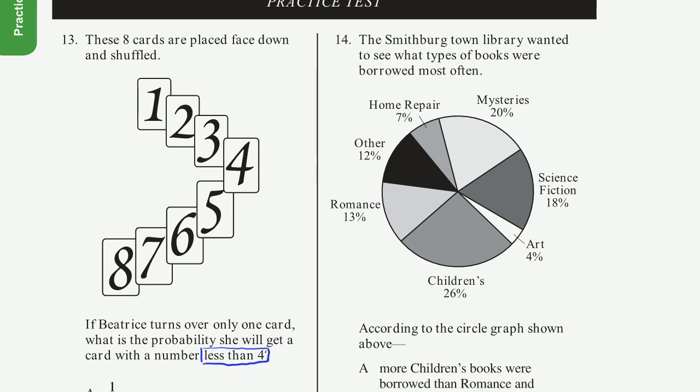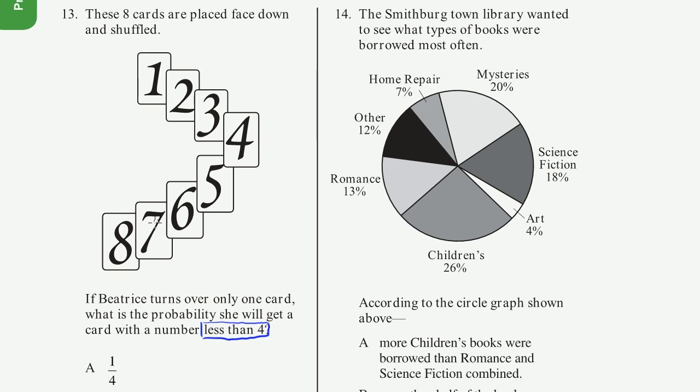So all of these cards right here are potential outcomes. She's going to flip them all over, and then she wants to know the probability that she gets a card less than 4. So what are the cards that satisfy that? Well, there's three cards that are less than 4.